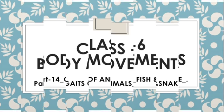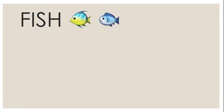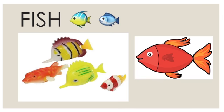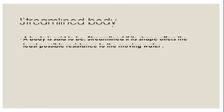First, let us see what a fish is. Fish are organisms which live in water. It is very important to learn about the movement of fish because fishes are not all the same size or same shape — they have various different shapes and sizes. This kind of movement is called streamlined movement.